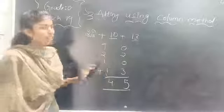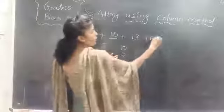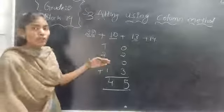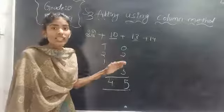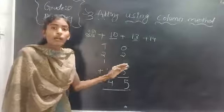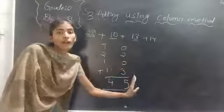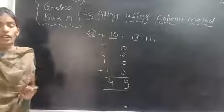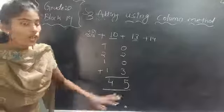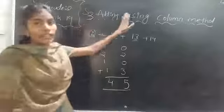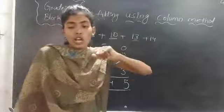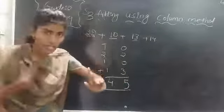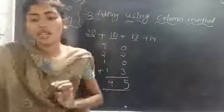So like this we can add. If you need to add more numbers, you do the same thing: arrange the numbers one under another according to their place values, then add the 1s place first, then add the 10s place. Have you understood children? Our topic today is adding using column method. So up to now we have completed the place value block method, the expansion method, and the column method.